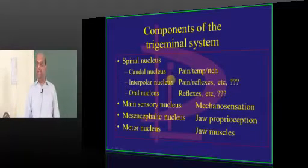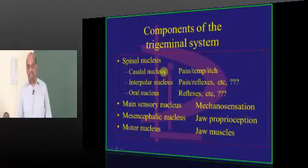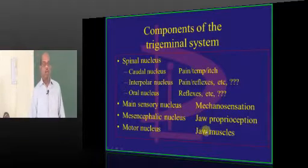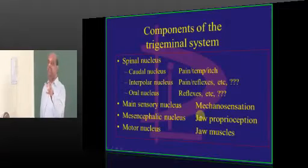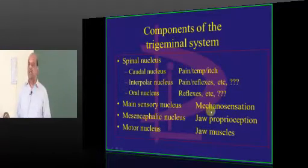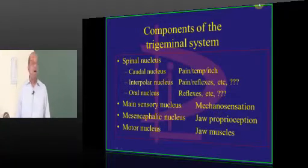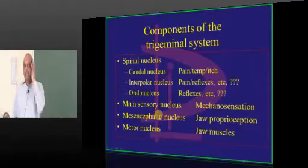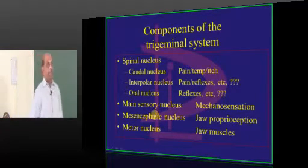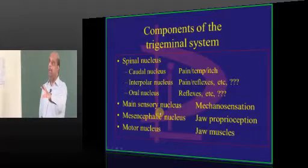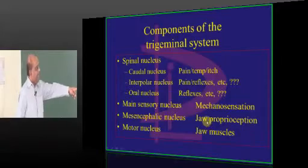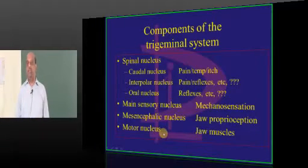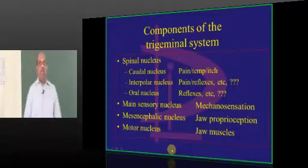The caudal part of the spinal nucleus is the one which carries pain, temperature, and itch coming from the face. The main sensory nucleus receives all mechanosensory information — jaw movement, joint movement, muscle stretching — from the Golgi tendon organs and muscle spindles of the face. The mesencephalic nucleus receives jaw proprioception, and the motor nucleus innervates the muscles of the jaw. That is why we have four different nuclei.